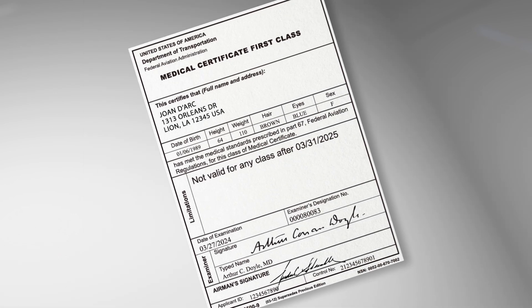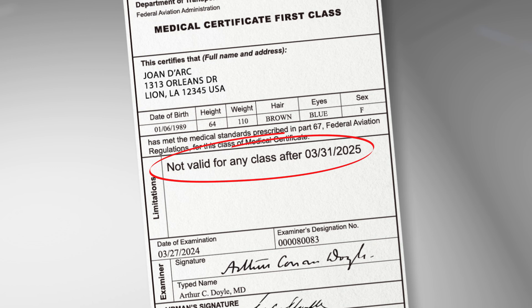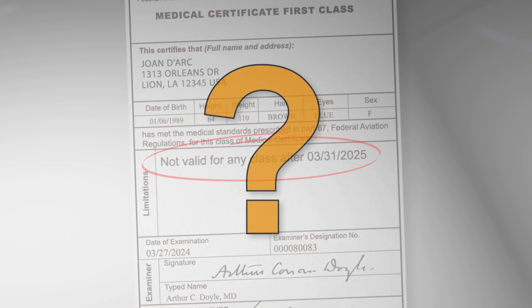Frequently, AMEs do not provide the 'not valid after' date, which is printed on a pilot's medical certificate. When this date is missing, it must be corrected and the certificate reissued by the FAA. This takes additional time for processing and contributes to delays. Failing to monitor certain medical conditions is a risk to aviation safety, and an AME will also receive an administrative error for this oversight.